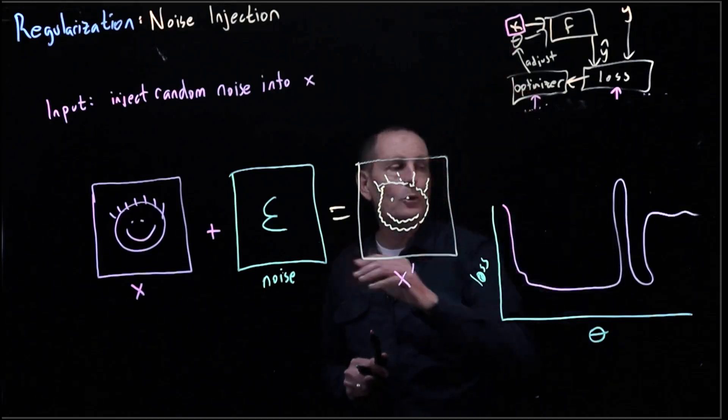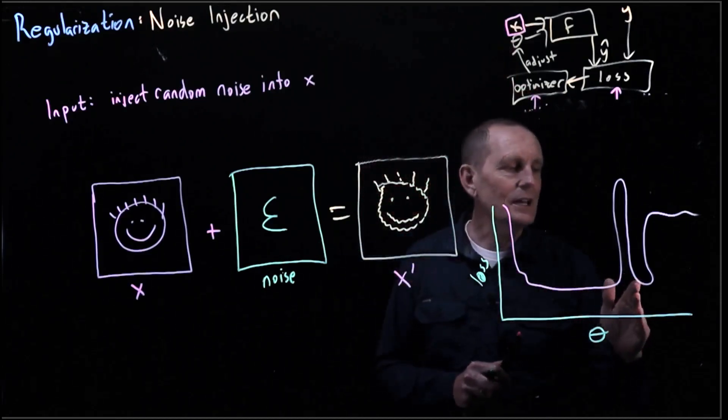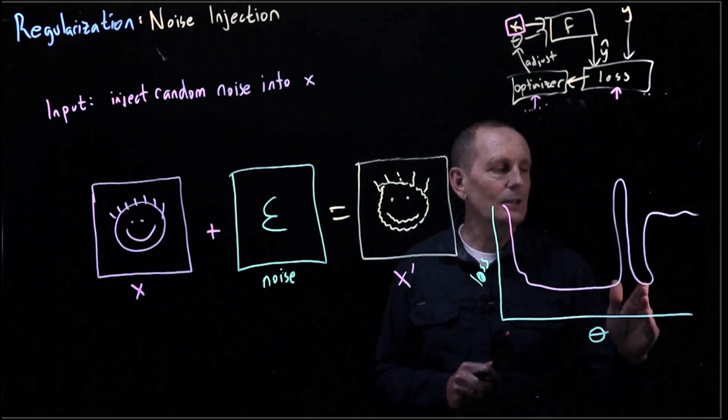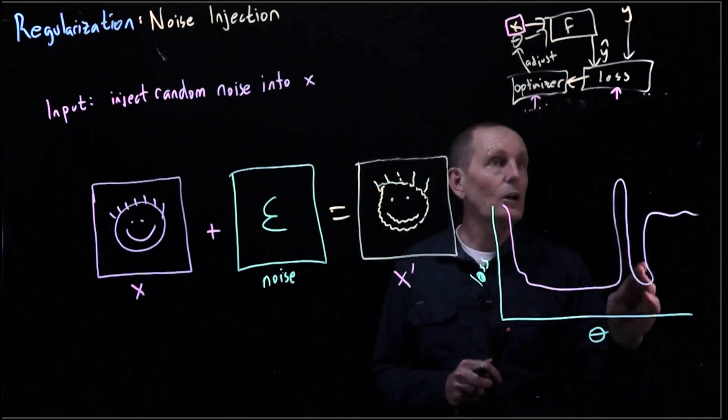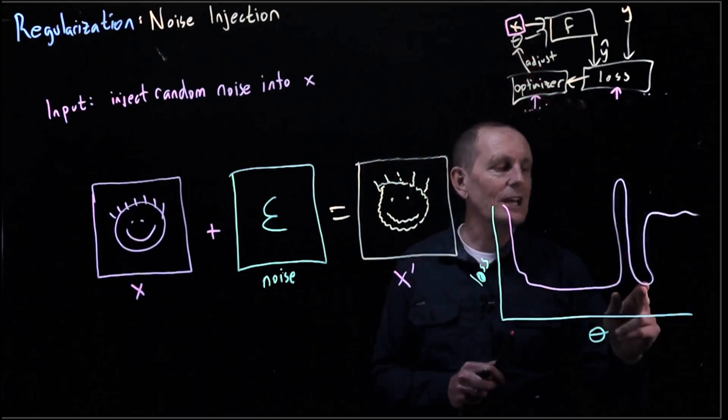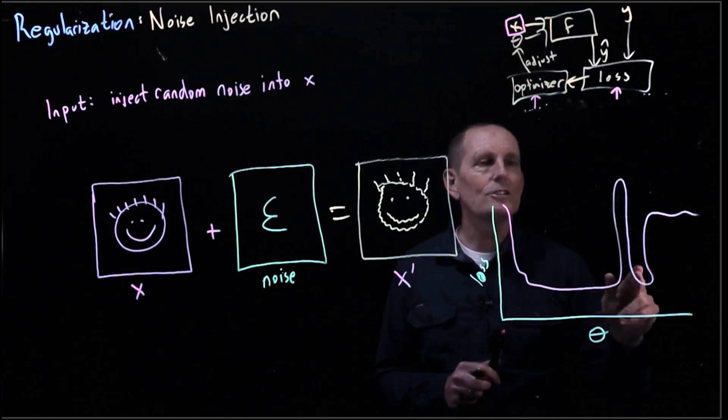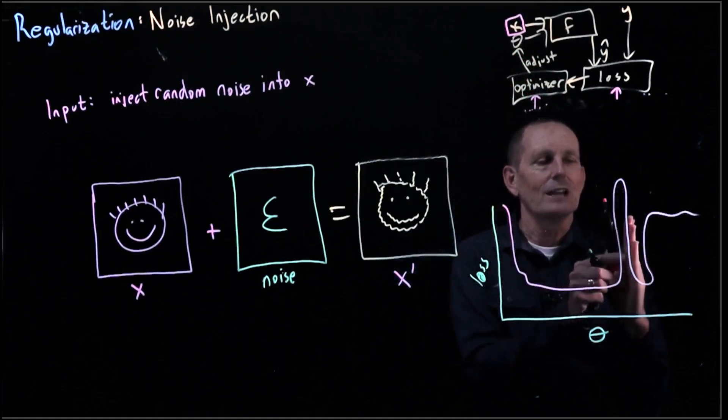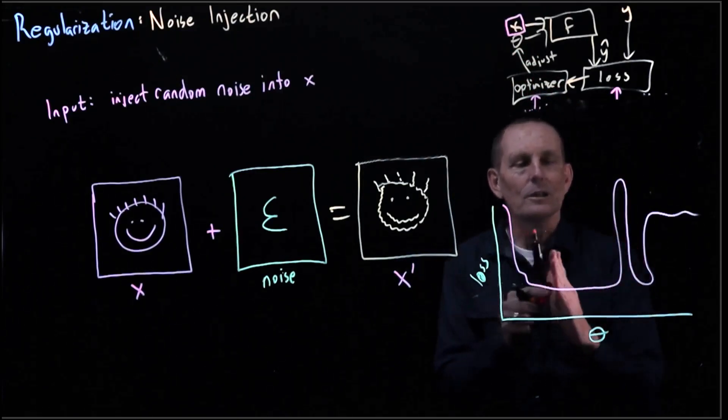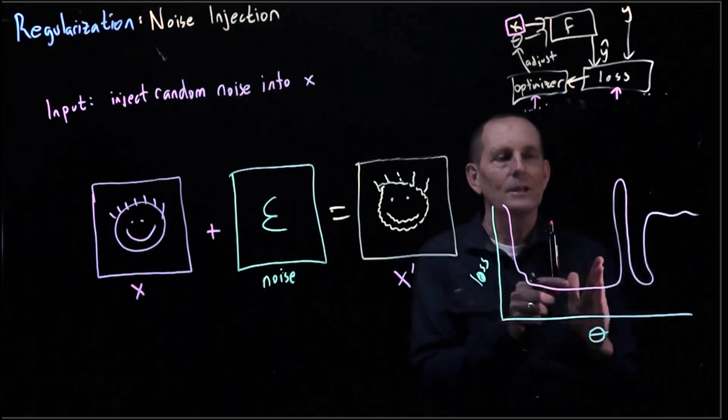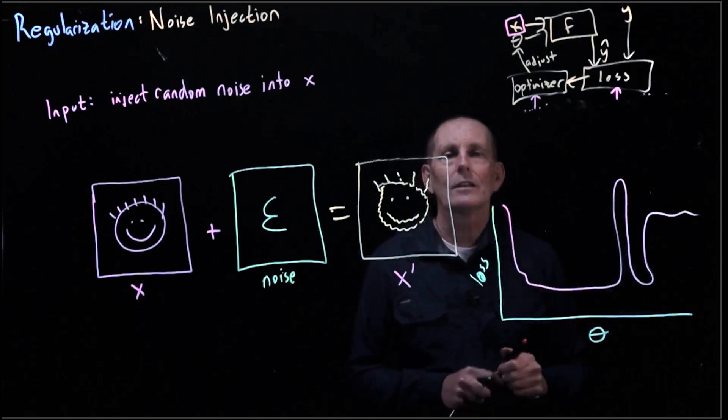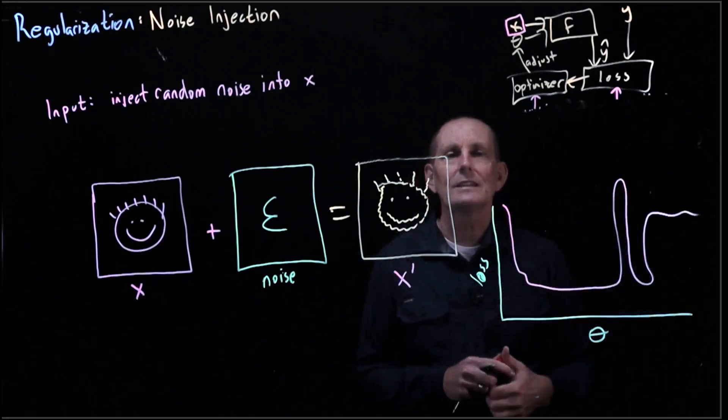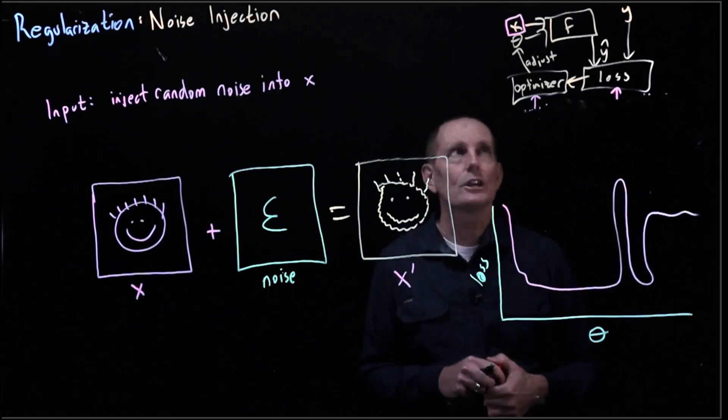And part of what this adding noise is going to do is take us out of this canyon, because we're going to be taking small changes. Small changes in x means we're going to end up with some small changes in theta. And our hope is, in this case, our error kind of will be big enough that we'll jump past this and then go into this larger area. And then we can make small changes. It doesn't really affect the loss. So that's the idea of this noise injection.